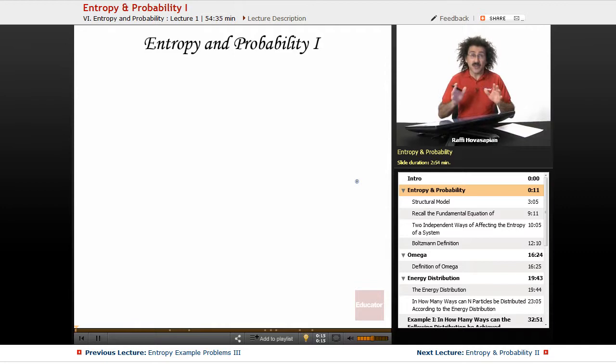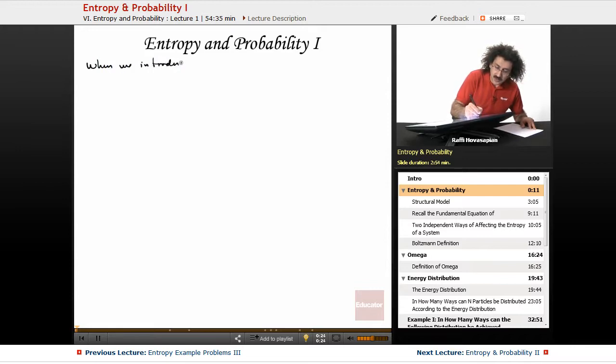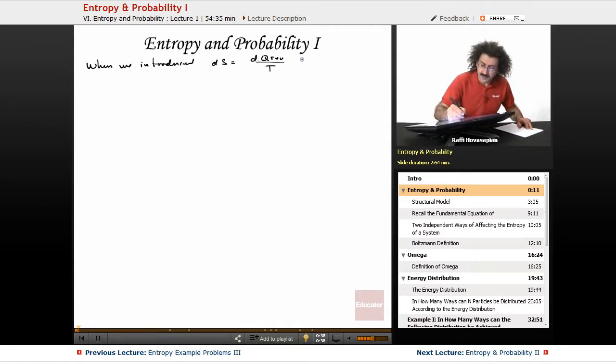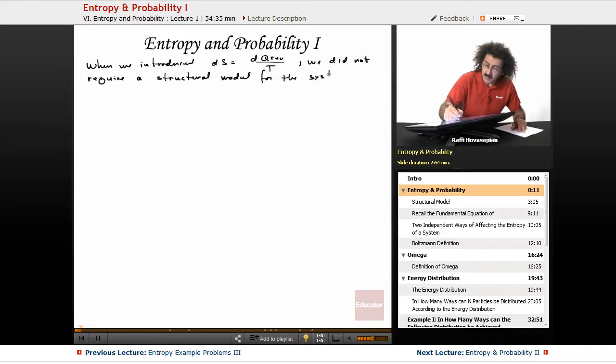When we introduced the definition of entropy, we said, well, let me actually write all of this out. When we introduced that ds is equal to dq reversible over t, which was our definition of the differential element, essentially the definition of entropy, we didn't give a structural model. We did not require a structural model for the system in order to work with entropy, in order to work with this state function entropy, or describe its behavior.